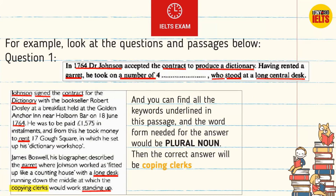For example, look at the questions and passage below. For question 1, the word form needed for the answer would be a plural noun. Then the correct answer will be 'copying clerks.'